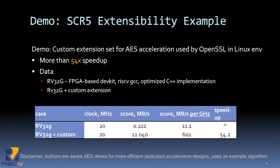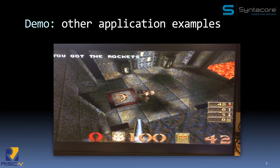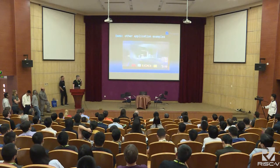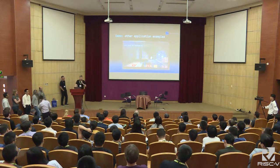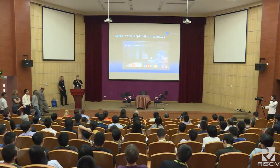Another demo is a extensibility example where we accelerate the AES encryption algorithm. We introduce custom instructions that provide more than 50 times acceleration over an optimized scalar implementation. We also have a number of other applications running, including debug. Please come to see our demos and learn more about our cores. Thank you.